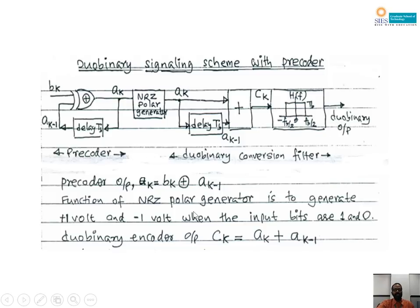There are two equations for the pre-coder system. First: AK = BK XOR AK-1 (pre-coder output, using XOR). Second: CK = AK + AK-1 (duo binary encoder output, which is voltage addition). Note the distinction: in the XOR operation, 1 XOR 1 = 0; in voltage addition, 1+1 = 2 V. If the voltages are the same, output is ±2 V; if bits are the same, XOR output is 0.